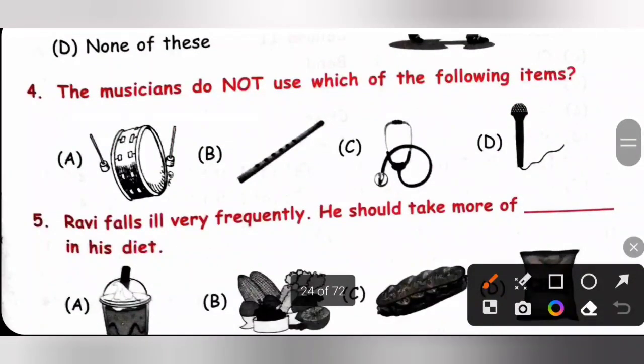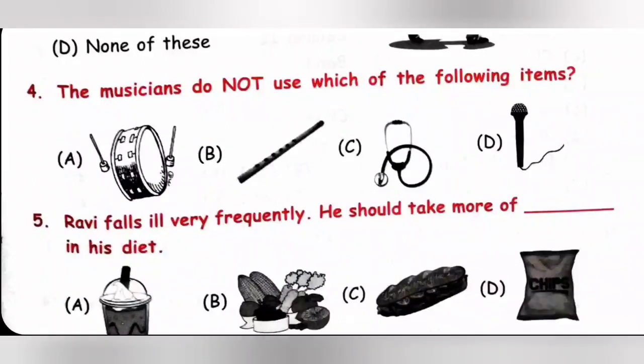Fourth one. The musicians do not use which of the following items? So, the musicians will not use stethoscope. So, option C is the correct answer. Stethoscope is used by doctors to listen to the heartbeat of patients. So, option C is the correct answer.